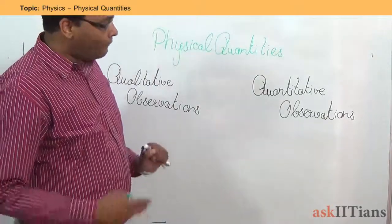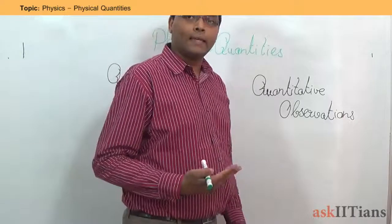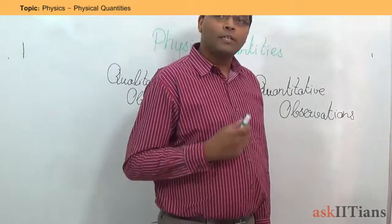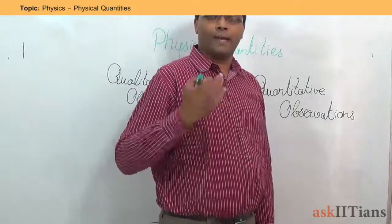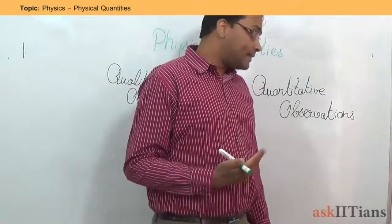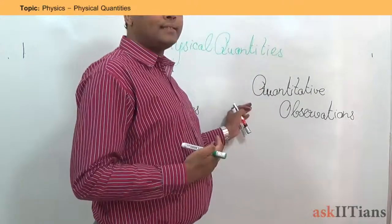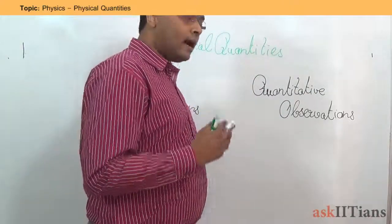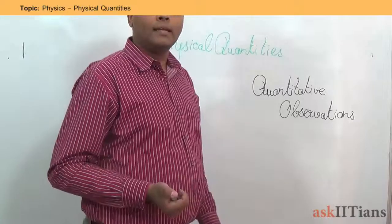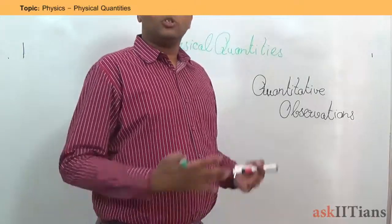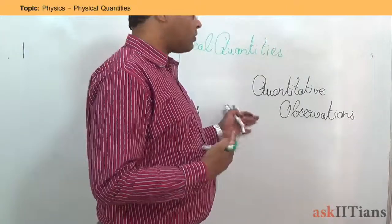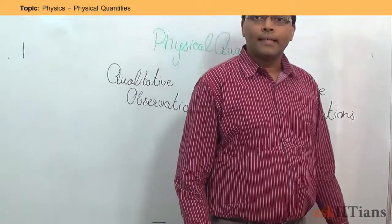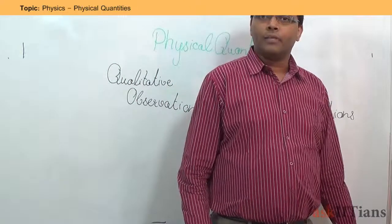Now if I have any particular measurable thing — for instance, let's say I want to know how much height I am flying at — that implies a kind of quantitative observation. Since we are dealing with realistic physical space, we will be more focused on quantitative observations rather than qualitative observations.